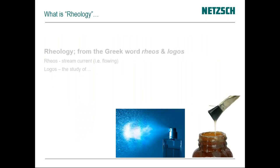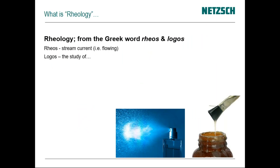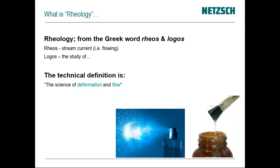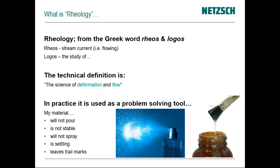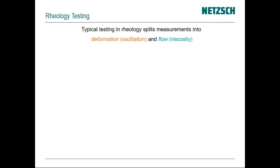As you may remember from Friday, what is the word rheology? It's derived from two words: 'rheos' meaning stream, current, or flowing, and 'logos' meaning the study of something. So you could say it's the study of rivers or the study of flowing. We now call it the science of deformation and flow. In practical terms it's used to solve problems — my material doesn't pour, it's not stable, doesn't spray very well, doesn't atomize nicely, sediments, or leaves trail marks when printing.